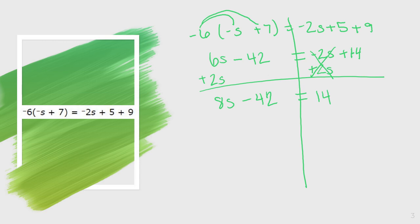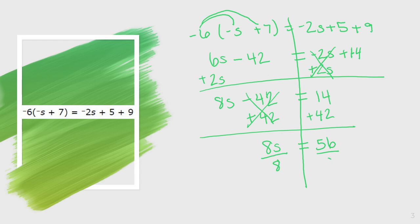Since 14 is over here by itself, I'm going to move the 42. I'm subtracting, so the opposite is to add 42 to both sides. When I add 42 to both sides, that cancels out, and I'm left with 8s equals 14 plus 42, which equals 56. My last step is to divide both sides by 8. When I divide by 8, I get s equals 7. So my answer is s equals 7.